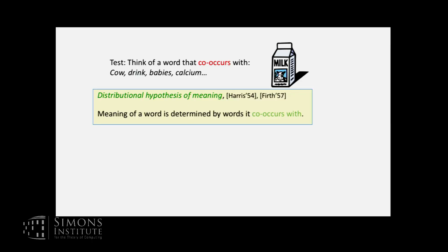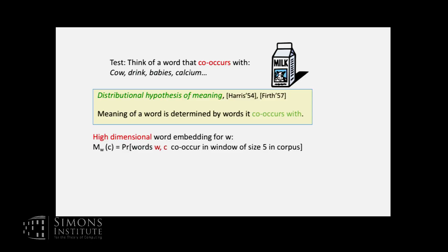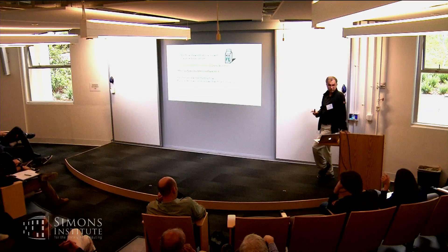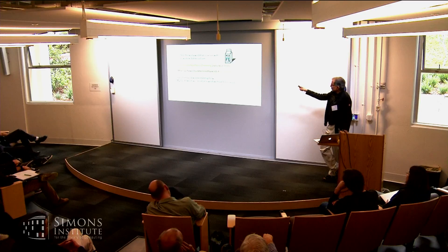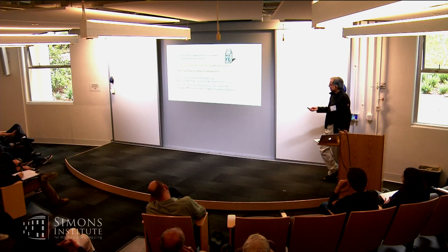This is a somewhat imperfect but pretty good definition of meaning. It already suggests a way to capture the meaning of a word: give the co-occurrence probabilities of all other words around this word. Look at a large corpus like Wikipedia; around this word, see how often some other word C occurs within distance five. That empirical distribution captures the meaning of the word. The dimension of this vector is 100,000 — one for each word in the dictionary.